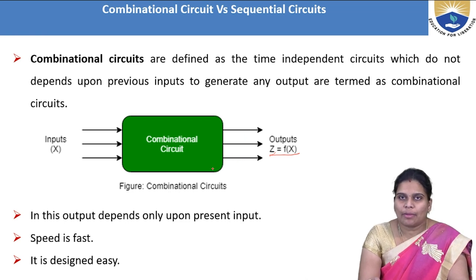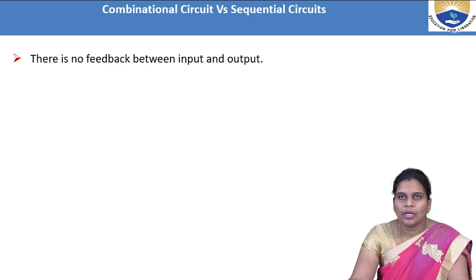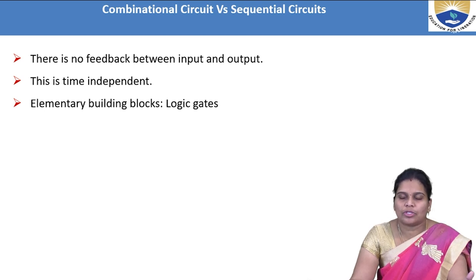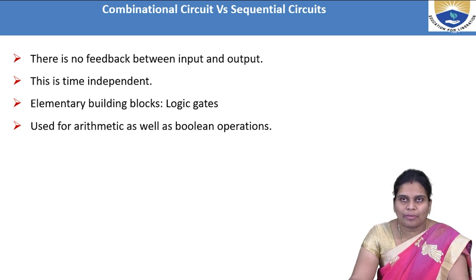Since the output depends on the present inputs only, the speed is very fast and the design is also very easy. Combinational circuits are designed based on present inputs only. Using logic gates, we can design combinational circuits. They do not depend on previous inputs, meaning no memory is required, and there is no feedback loop from input to output. They are used for arithmetic as well as boolean operations.